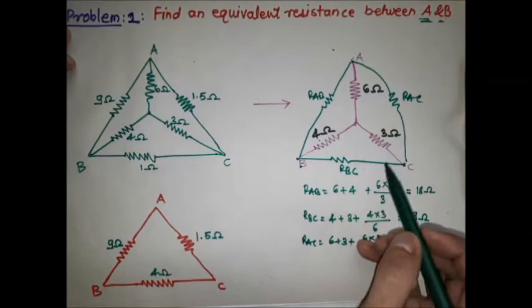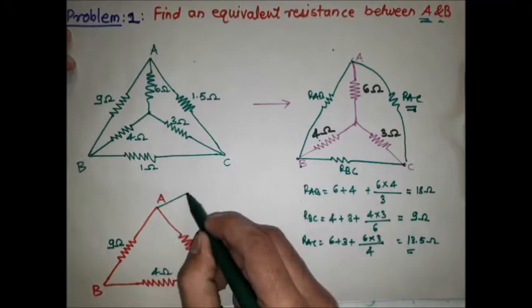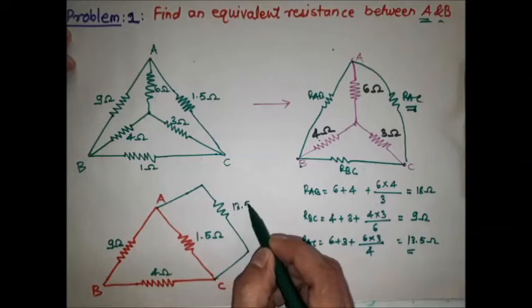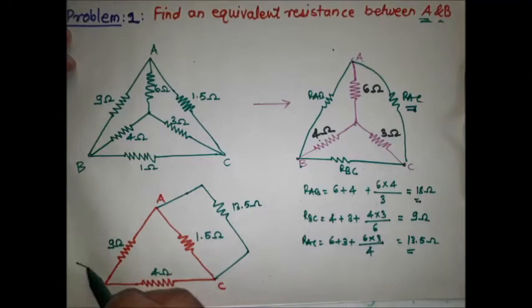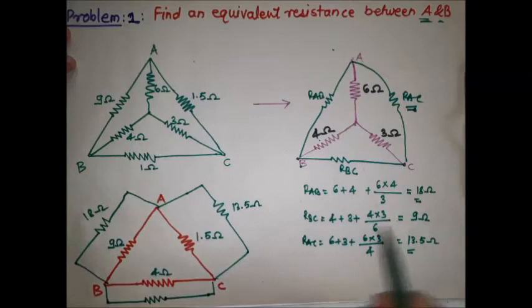We now replace the star network with the equivalent delta network. RAC = 13.5 ohm is connected between terminals A and C. RAB = 18 ohm is connected between terminals A and B. RBC = 9 ohm is connected between terminals B and C.